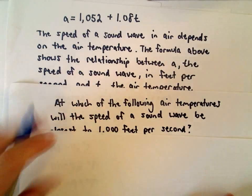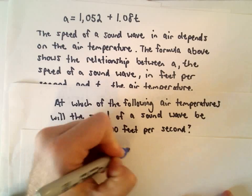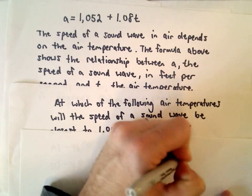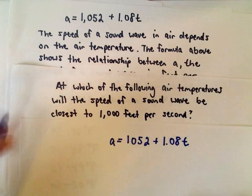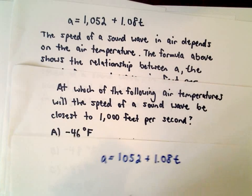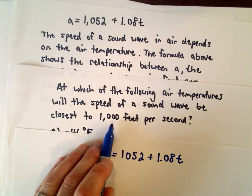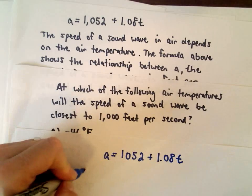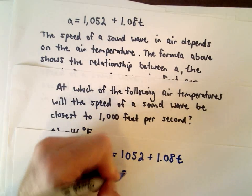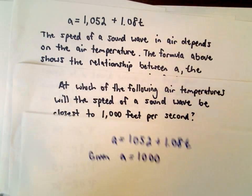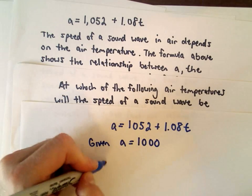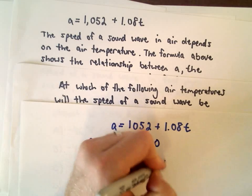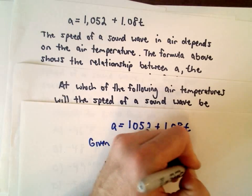So we've got our formula here again: A equals 1,052 plus 1.08t. We're trying to solve for a temperature. We're told that A, the speed of the sound wave, is 1,000 feet per second. So we're given that A equals 1,000. Now we just substitute that into the left side. We'll have 1,000 equals 1,052 plus 1.08 multiplied by t.